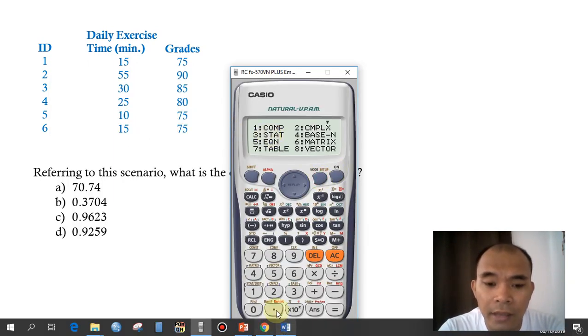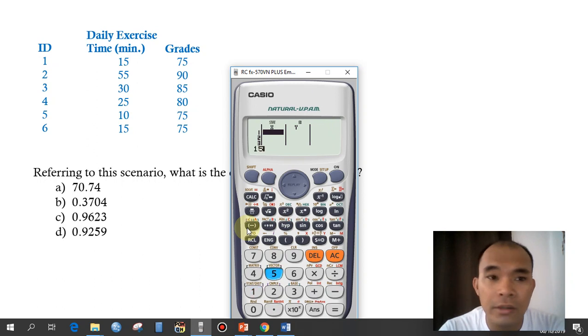You go to the mode and then start. 3. Then again, a plus bx, that's 2. And then just input the values. 15, 55, 30, 25, 10 and then 15.